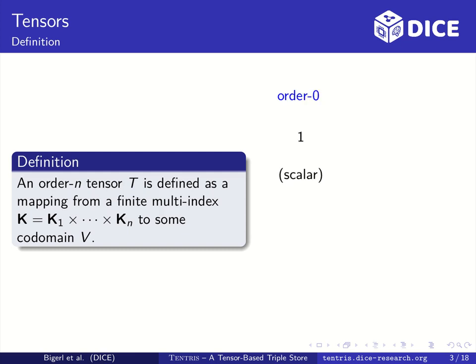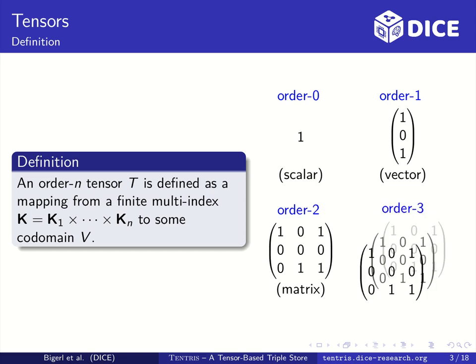An order 0 tensor is what we know as a scalar. An order 1 tensor can be a vector, a well-known order 2 tensor is a matrix and a good intuition for an order 3 tensor is a 3-dimensional matrix.